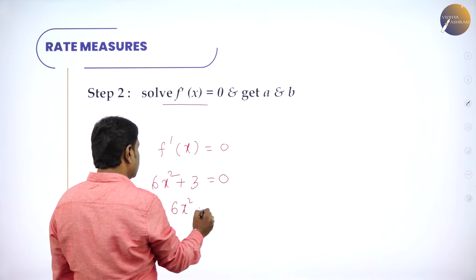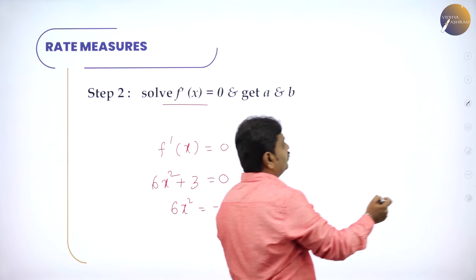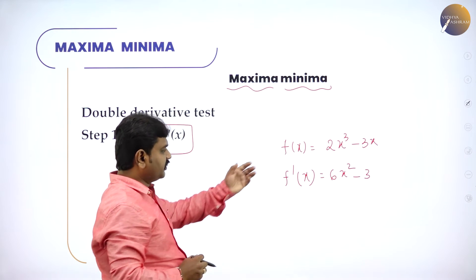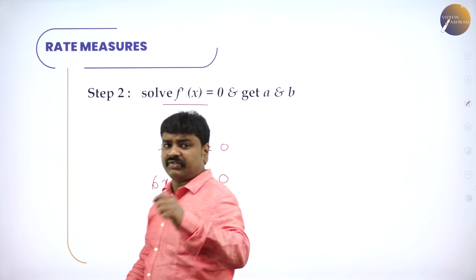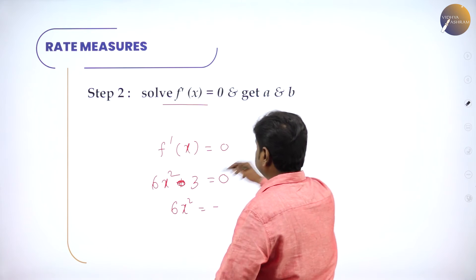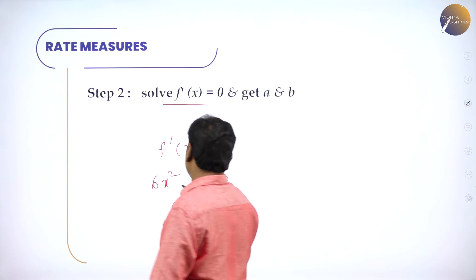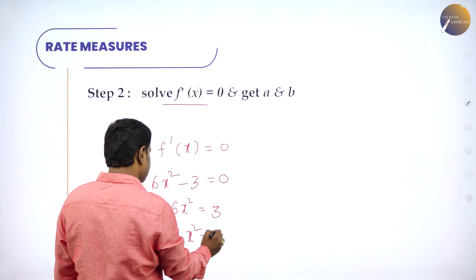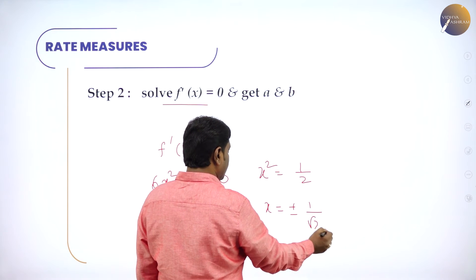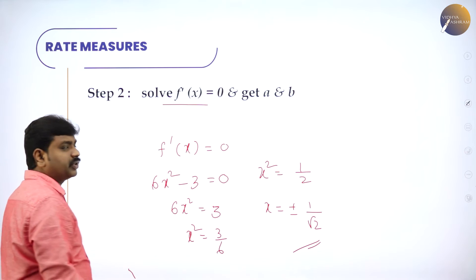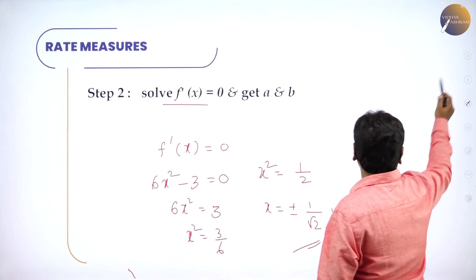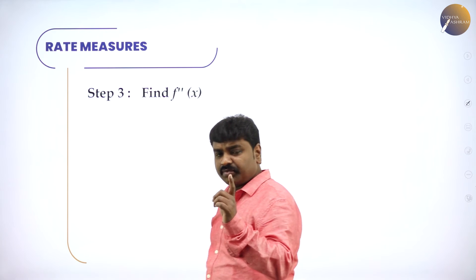Taking a clearer example: f'(x) = 6x² − 3. Equate to 0: 6x² − 3 = 0, so 6x² = 3, x² = 3/6 = 1/2, giving x = ±1/√2. Step one: differentiate and find f'(x). Step two: equate the derivative to 0 and get values of x. Step three: double differentiate.